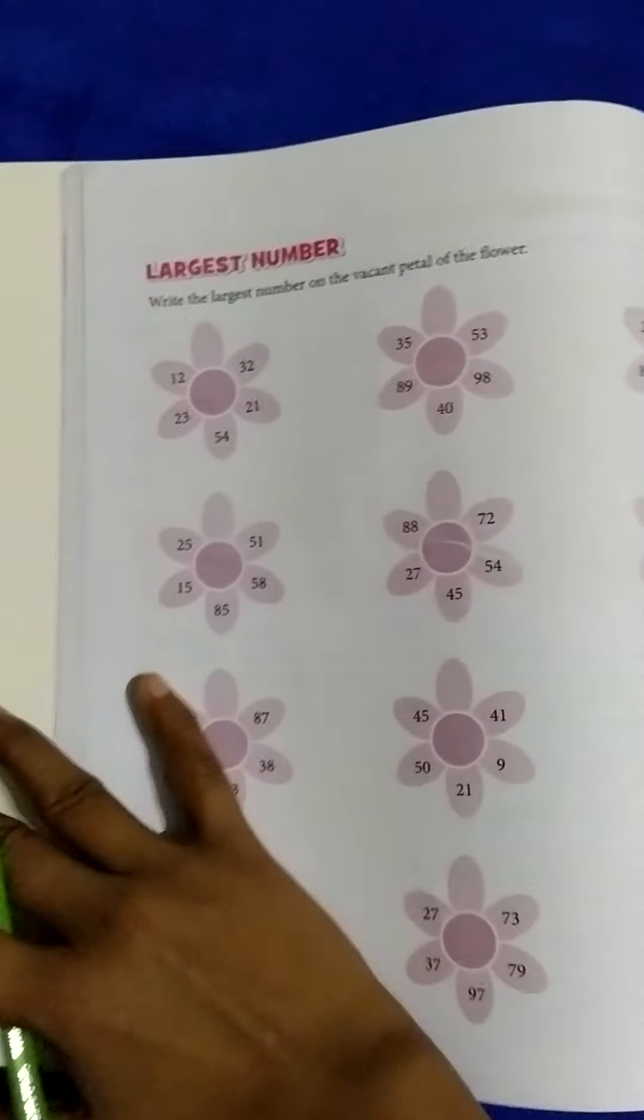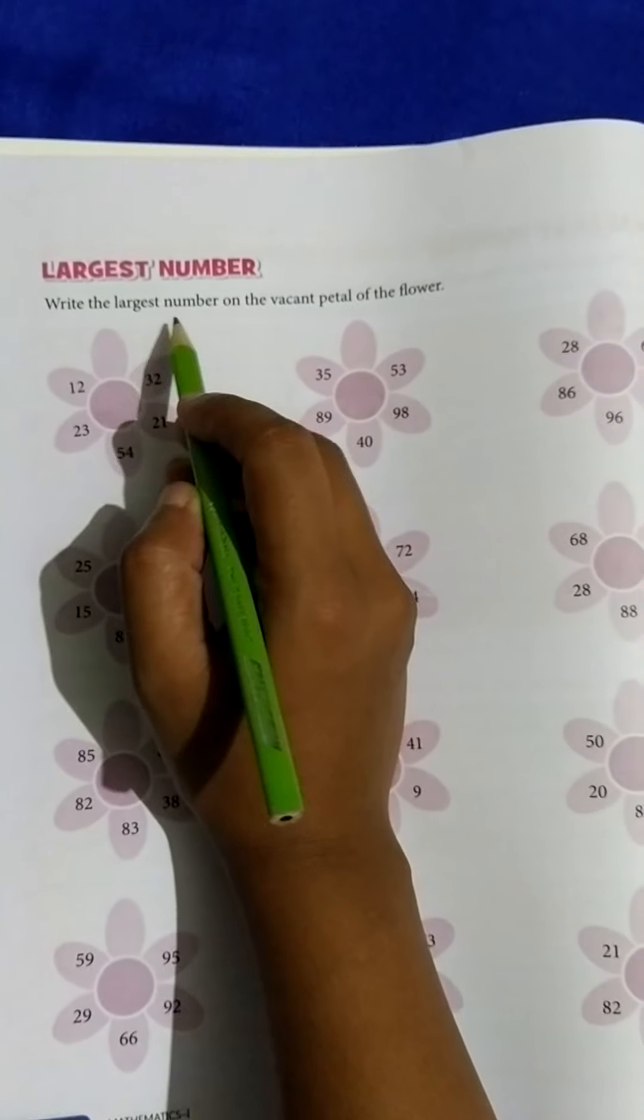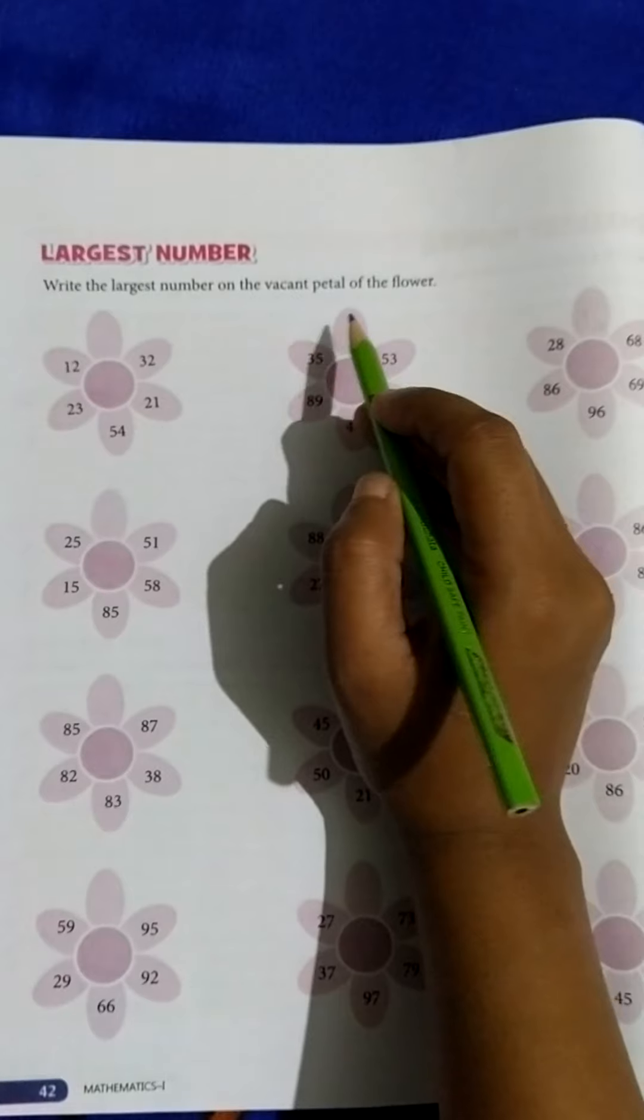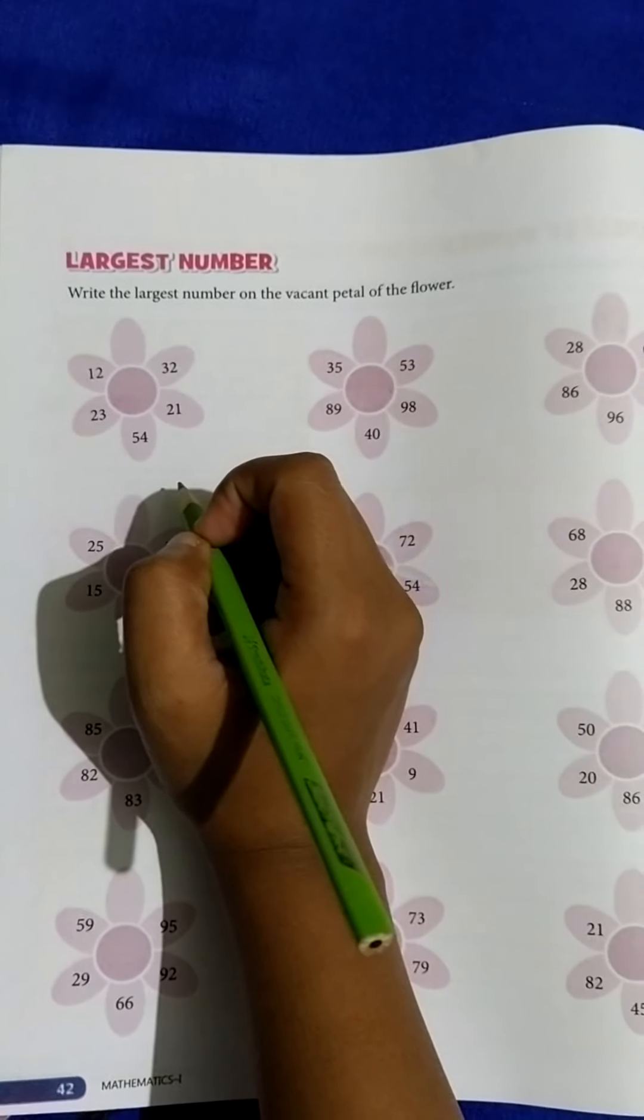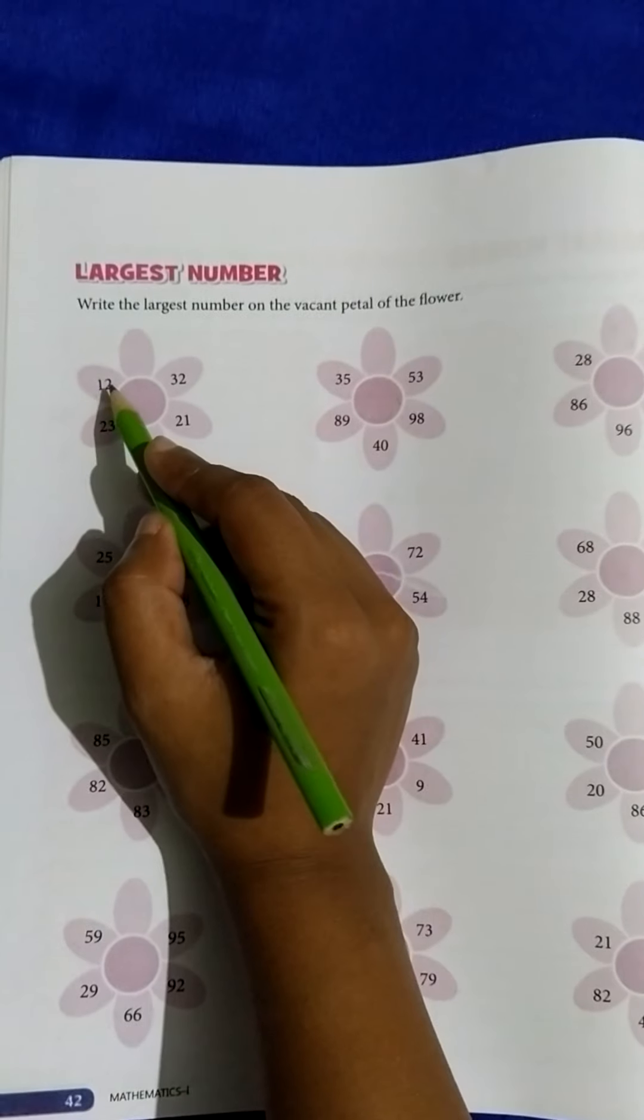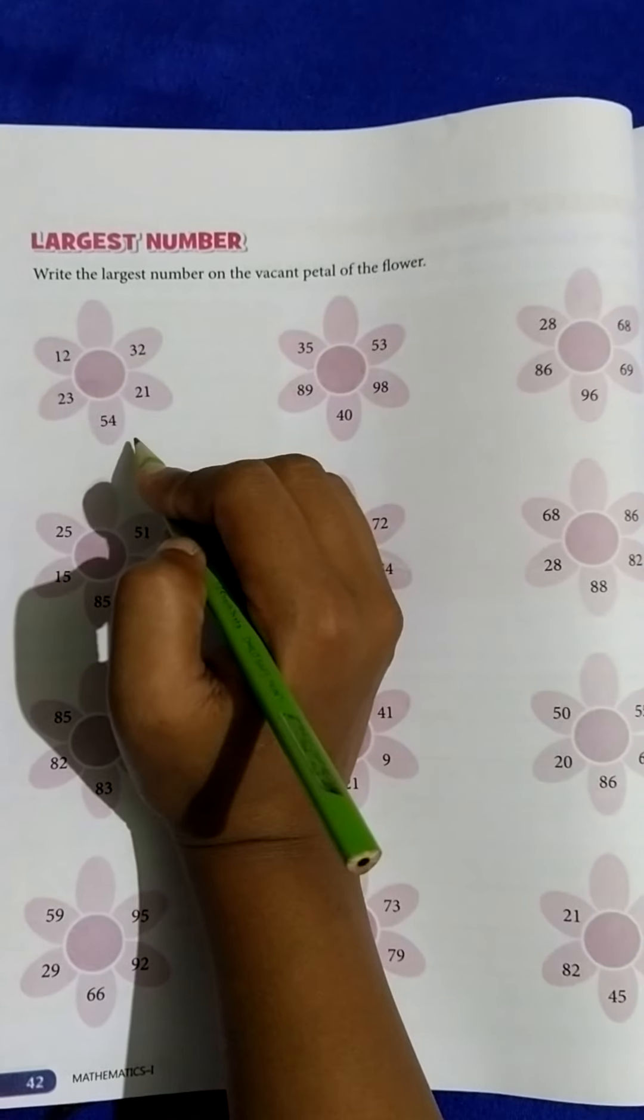Like this, page number 42, largest number. Write the largest number on the vacant petal of the flower. You have to write the largest number on the blank petal. Choose the largest number. Which is largest?